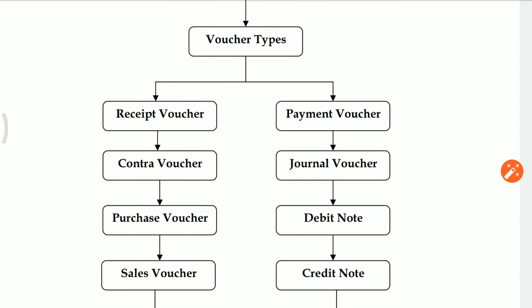Voucher Types: The first one is Receipt Voucher. In Receipt Voucher, always bank or cash account will be debited. If you try to debit a different ledger, then Tally Software immediately pops up a message that you have not selected cash or bank account. In the case of Payment Voucher, a similar concept applies. If you book a payment entry, there is always cash and bank account that should be selected.